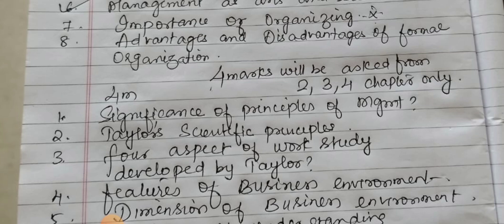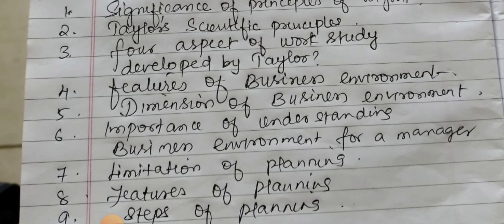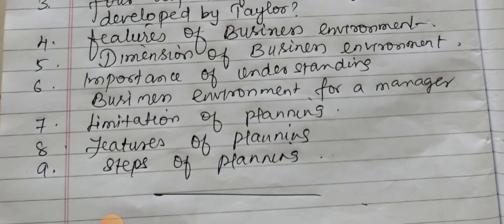But I have chosen some of the important questions which is: scientific principles of management, Taylor's scientific principles, significance of principles of management, four aspects of work study developed by Taylor, features of business environment, dimensions of business environment, importance of understanding business environment for a manager, limitation of planning, features of planning, and steps of planning.